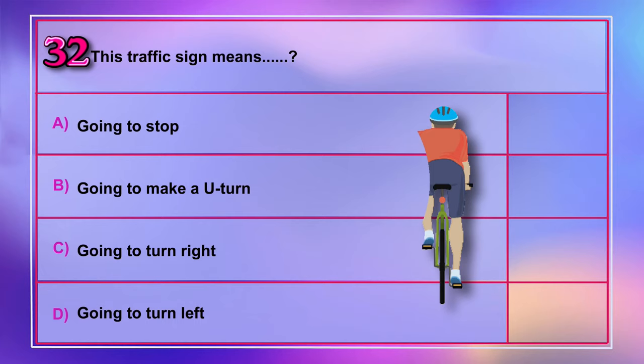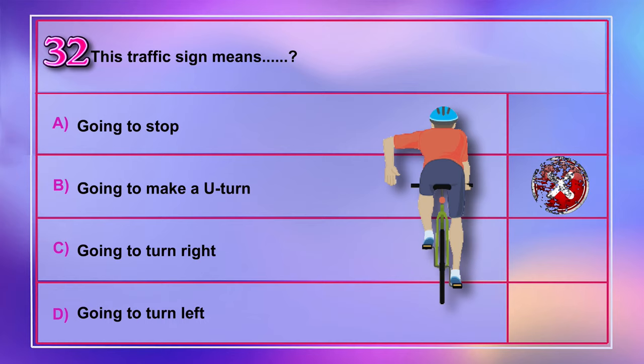Question number 32: This traffic sign means A) going to stop, C) going to turn right, D) going to turn left. Correct answer is A: going to stop.